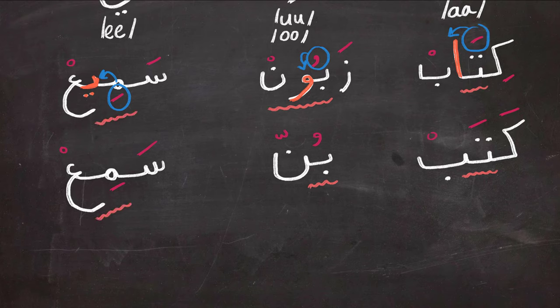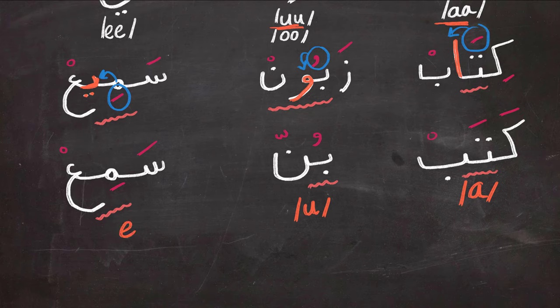In the first pair of examples, we notice a difference between 'kitab' — long 'a' — and 'katab' — short 'a.' The difference between 'zaboon' and 'bun' makes the short and long distinction clear as well. And in the last example, 'sami'' versus 'sami'' illustrates the long and short 'i' sound.